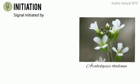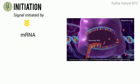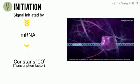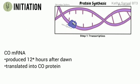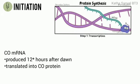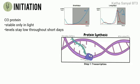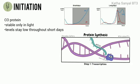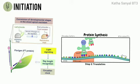In Arabidopsis thaliana, the signal is initiated by the production of mRNA coding for a transcription factor called CONSTANS (CO). CO mRNA is produced approximately 12 hours after dawn and is then translated into CO protein. However, CO protein is stable only in light, so levels stay low throughout short days and are only able to peak at dusk during long days when there is still some light.